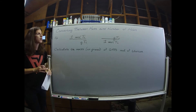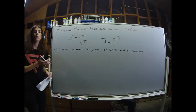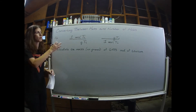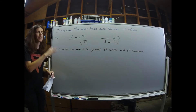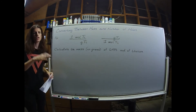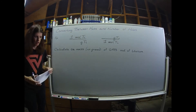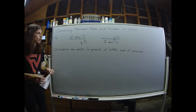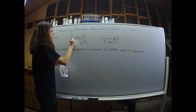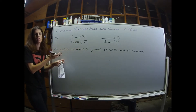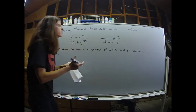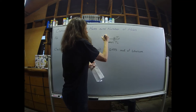On number 16, the first thing we're asked to do is complete our two conversion factors. Once again, that information is going to be found on the periodic table. So I'm going to grab 47.87, the atomic mass of titanium, and I'm going to put it over here as well.